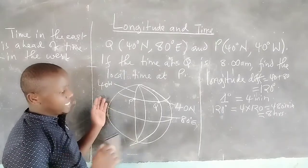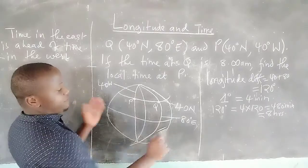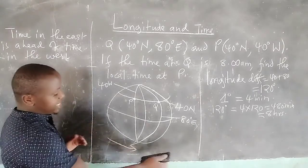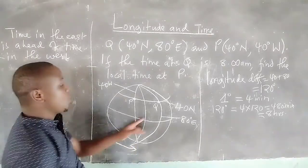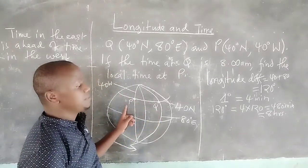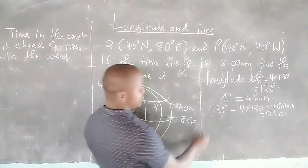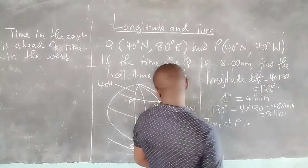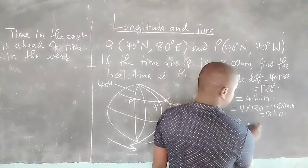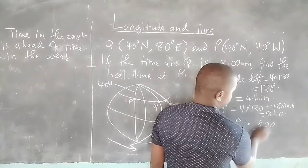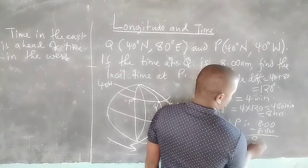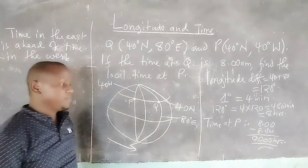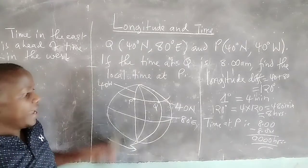Remember, the earth is rotating in a west-east direction, so the west part is going to the east. Therefore east is ahead in time. Because Q is ahead in time, P is behind by 8 hours. Time at P is 8 a.m. minus 8 hours, which gives us 0 hours — exactly midnight.